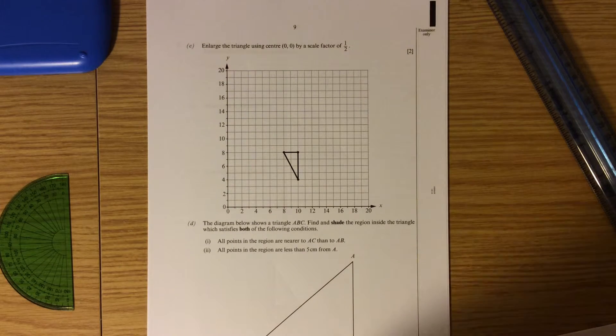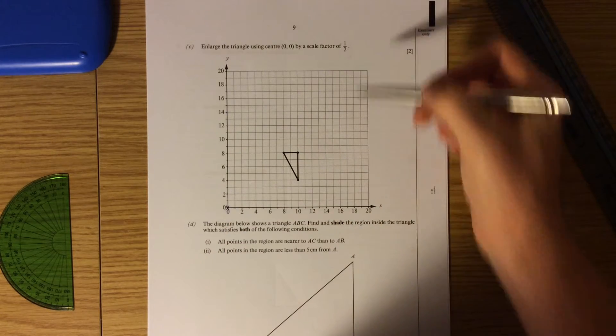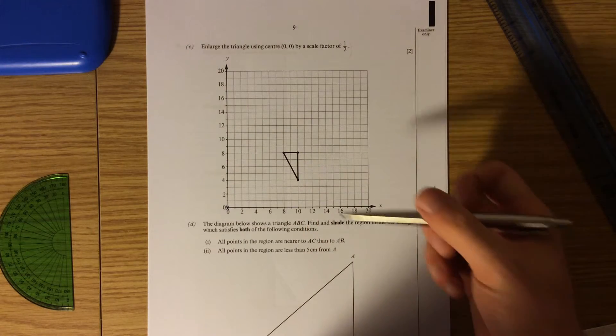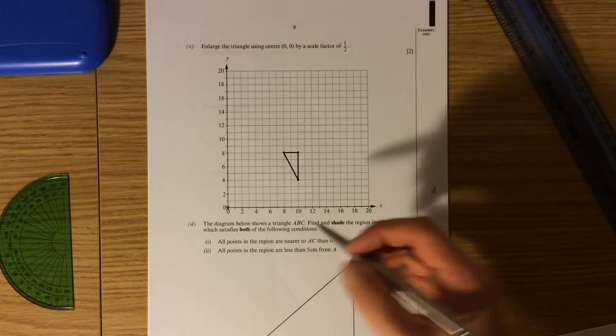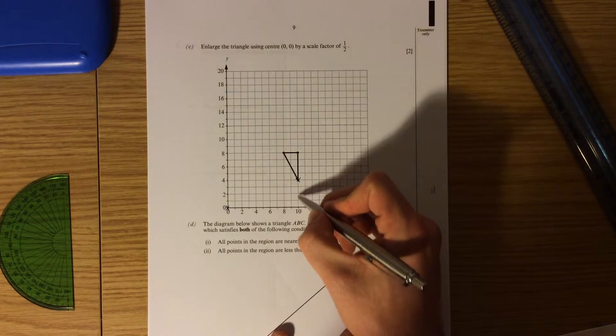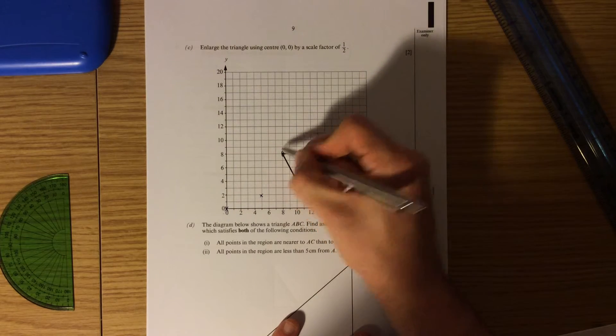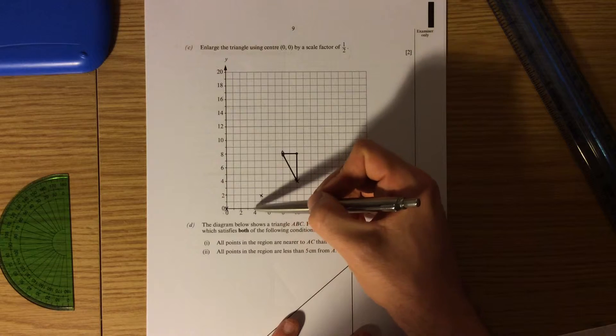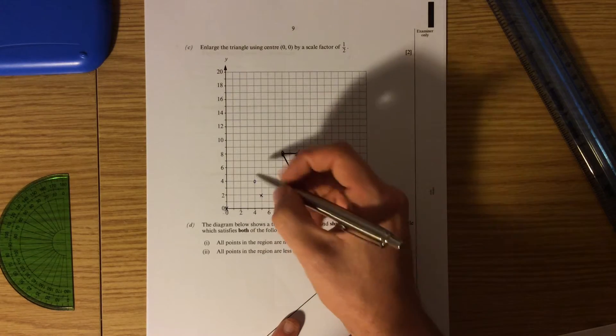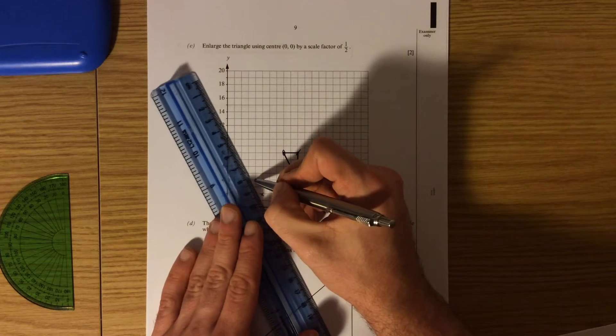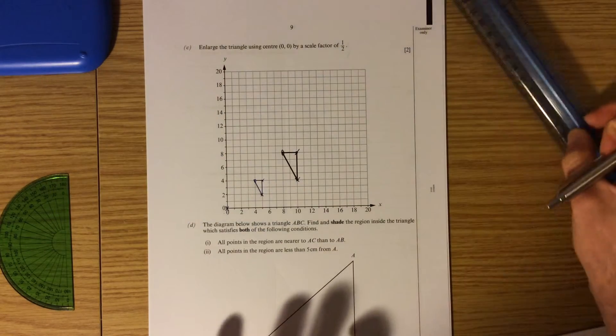Part C, enlarge the triangle using centre 0, 0 by a scale factor of a half. So all my enlargements have to take place from the point 0, 0. Because I have a scale factor of a half, that means this shape is actually going to get smaller and closer to the centre. Instead of multiplying the distances by the scale factor, again I'm going to multiply it by a half, which means I'm going to divide by 2. So currently to get to this corner here, I have to go across 10 and up 4. If I multiply each of them by a half, it means I'm going to go across 5 and up 2. And that is where that will become. This point here, again at the moment I'm going across 8 and up 8. So I'm going to go across 4 and up 4, which will give me that point there. And then this one here, at the moment it's across 10 and up 8. So that becomes across 5 and up 4. And that will be there, again producing my new shape. And as it has been an enlargement by a half, the new triangle is going to be smaller, and all lines will be half the size of the originals.